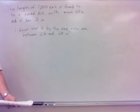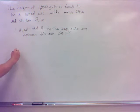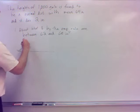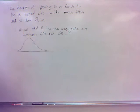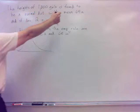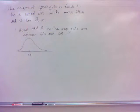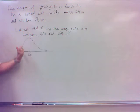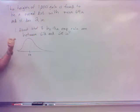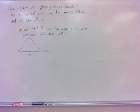Since I'm using the empirical rule, let's draw the picture. The mean, sixty-four, goes right in the middle. Sixty-two is below the mean, so sixty-two goes over on the left. One standard deviation puts me two units down, so sixty-two is one standard deviation below the mean.